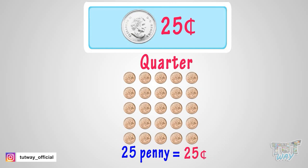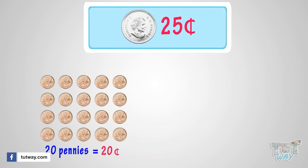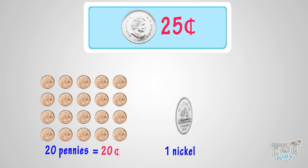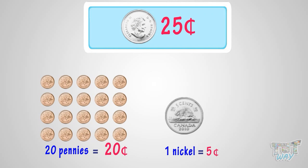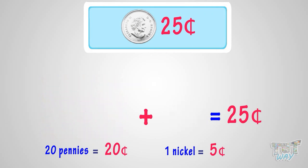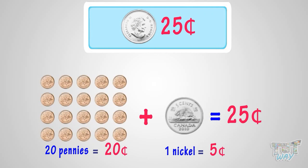Another way can be 20 pennies and a nickel. As 20 pennies make 20 cents, and one nickel is 5 cents, so in total we have 25 cents. 20 cents plus 5 cents equals 25 cents. So we can exchange this set of coins too for a quarter.